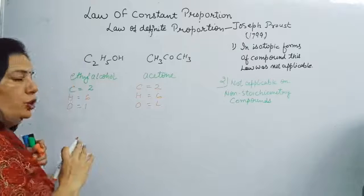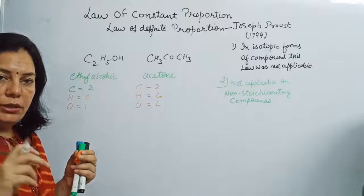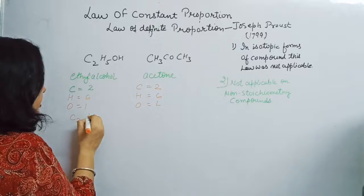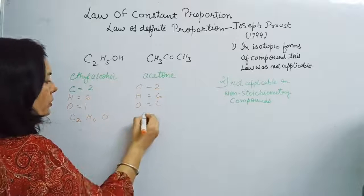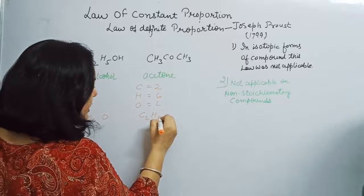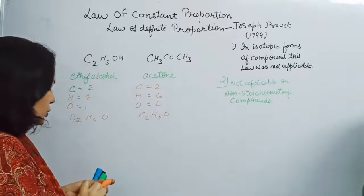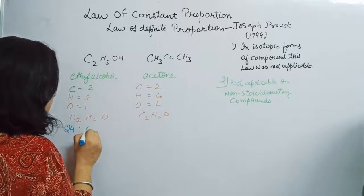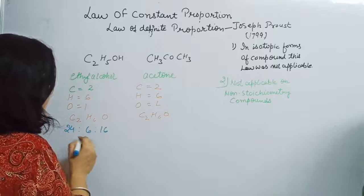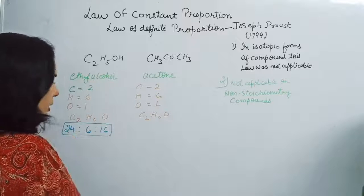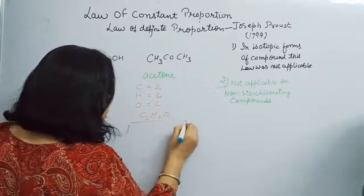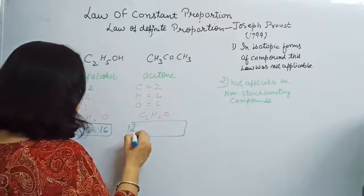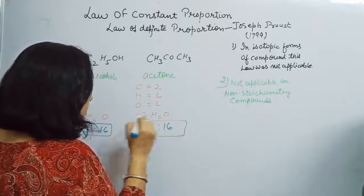Both compounds have the molecular formula C2H6O. The ratio of carbon to hydrogen to oxygen by mass is 24:6:16 in ethyl alcohol. In acetone, the ratio is again 24:6:16 — the same ratio.